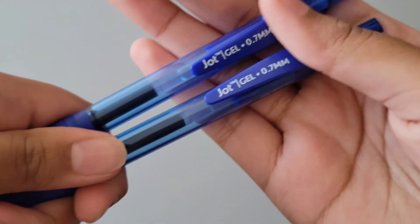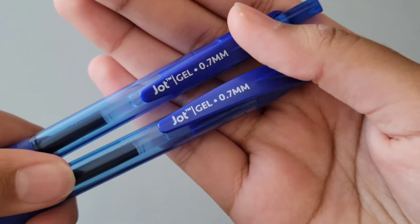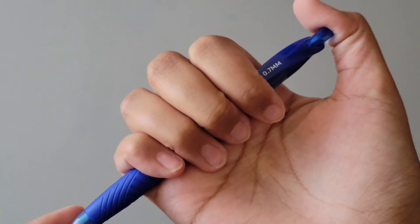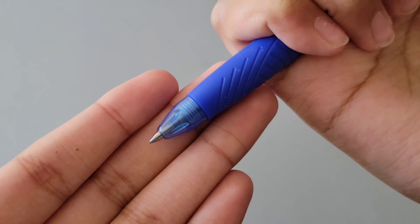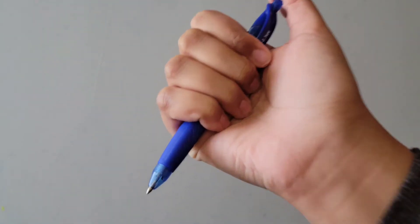That is how it looks like. And these are the blue ones, same brand, Jot-TM. Those are the blue ones. It is a retractable pen, and that is how the point looks like. It is a fine, smooth point.